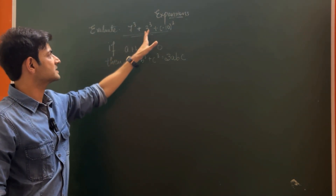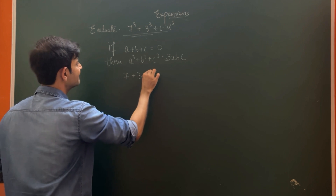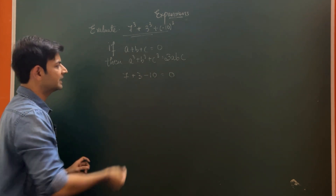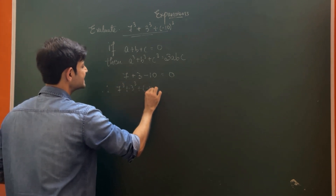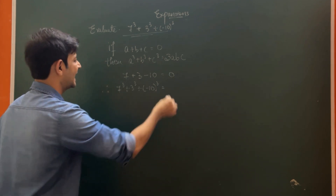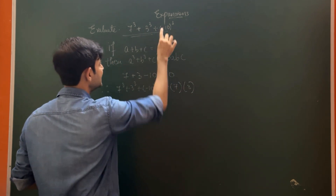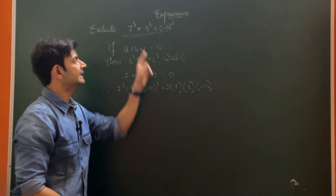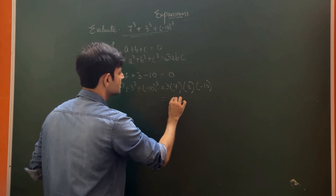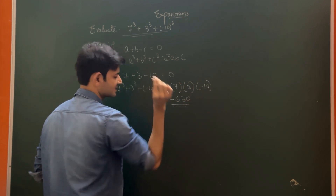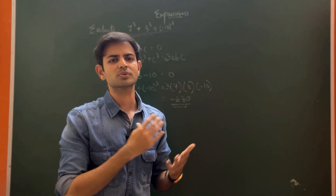Before applying this property, check that the sum of all terms equals zero. For example, evaluate 7³ + 3³ + (-10)³: since 7 + 3 - 10 = 0, we apply the property. So 7³ + 3³ + (-10)³ = 3 × 7 × 3 × (-10) = -630. You can try more questions from your textbooks using these formulas.